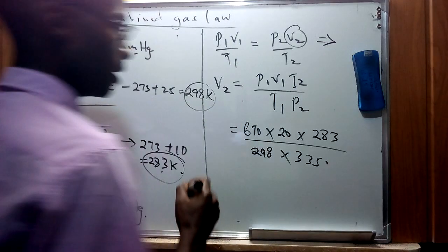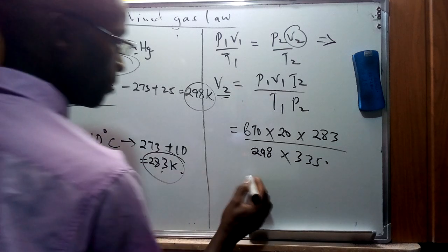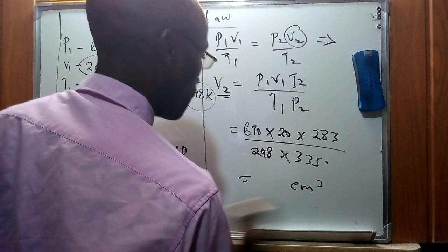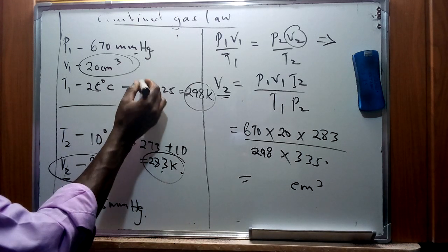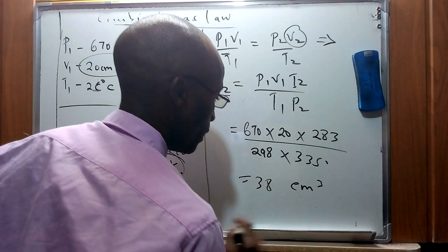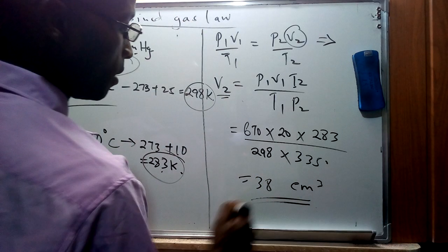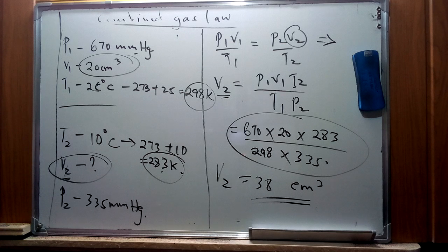With V1 = 20 cm³, the result will be in cm³. Carrying out the calculation, this gives approximately 38 cm³. We can verify this from the substitution written on the board. This is how the combined gas law can be applied to solve problems involving changes in pressure, volume, and temperature.